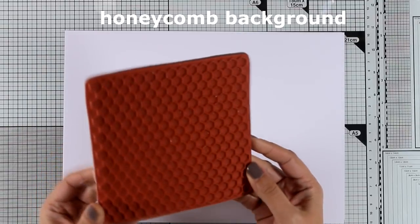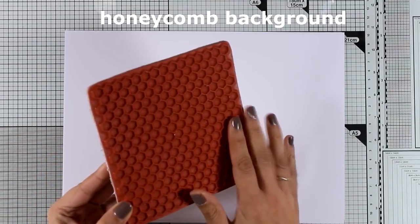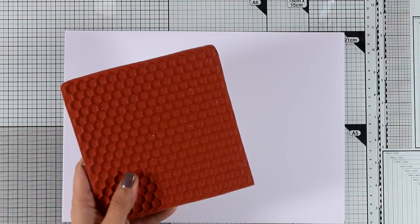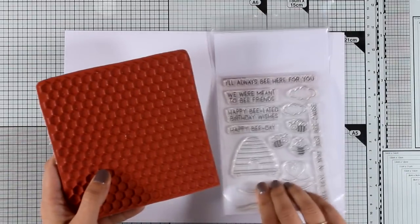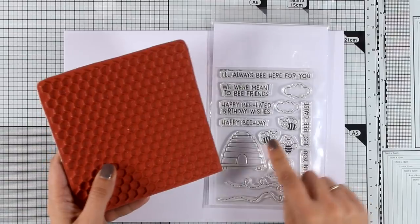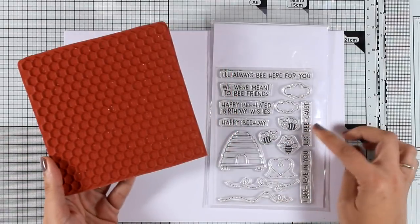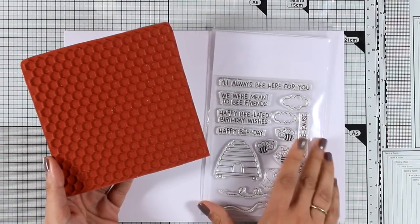And here is the big rubber stamp for this month, it's called Honeycomb Background and it gives you that honeycomb pattern which is perfect to pair with the stamp set with the bees. This is a huge background that is going to cover up the standard card both horizontally or vertically.